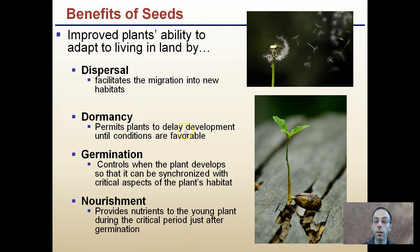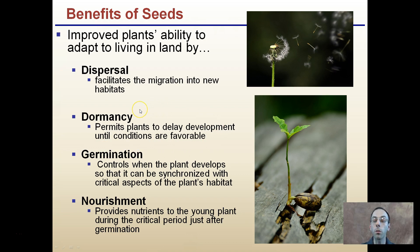Dormancy permits plants to delay development until conditions are favorable. A plant doesn't necessarily want to germinate in the fall, when it won't be able to tolerate the harsh winter — particularly in New England. Germination controls when the plant develops, allowing it to be synchronized with the most favorable seasonal conditions.